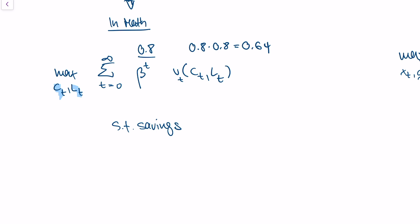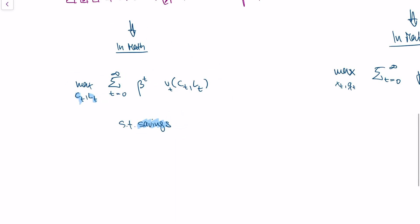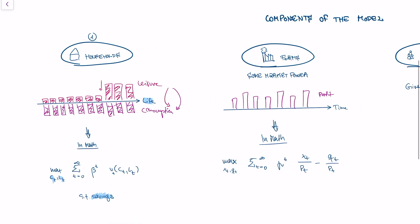Of course, there are various constraints that the household has to face. In order to get consumption, I need to work and I need to spend money. In our model, our household can have savings, so it can work but can put money in the bank or in government bonds. This is our first agent, the household.